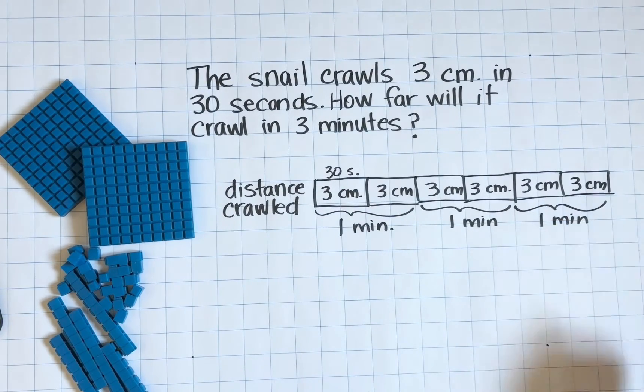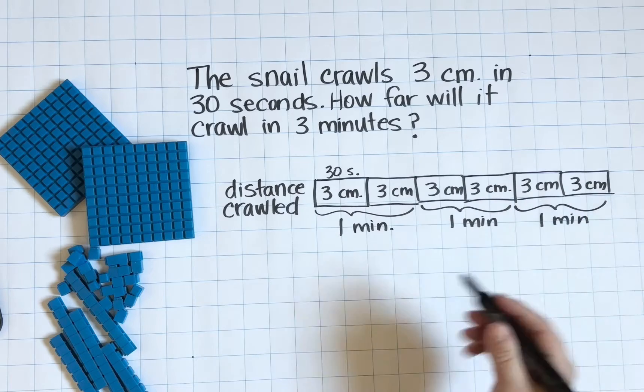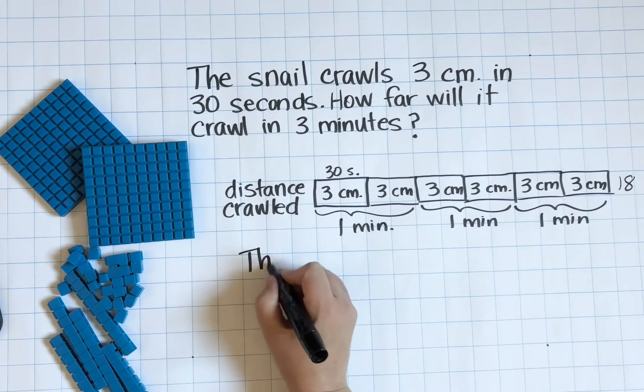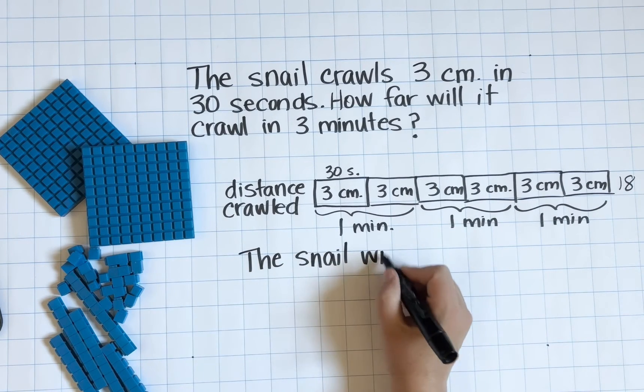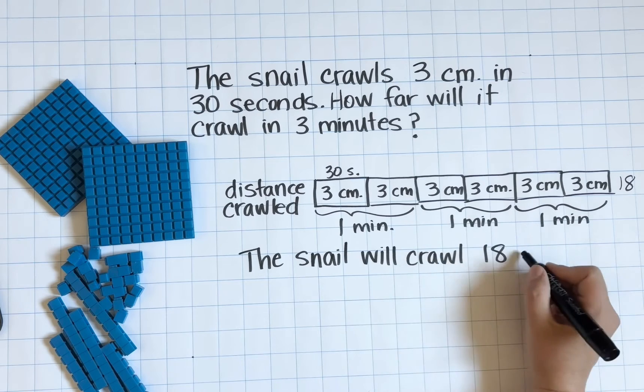There you see my finished bar model. Now I know that I can easily just multiply six groups of three to make 18. So the snail will crawl 18 centimeters in three minutes.